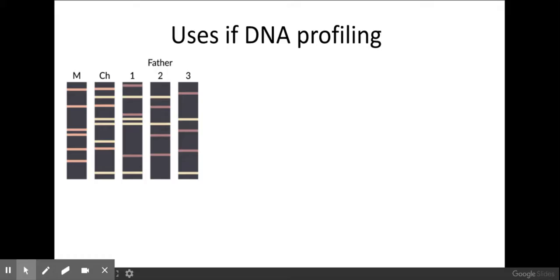So as you can see from this image here, we can use DNA profiling for paternity tests to identify who the father of a child is. So this one's the mother, this one's the child, and these are the three possible fathers. But you can see which one is the actual father by comparing to see who has the most matches between the child and the fathers.